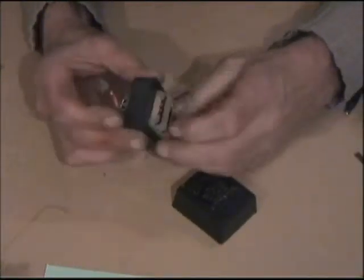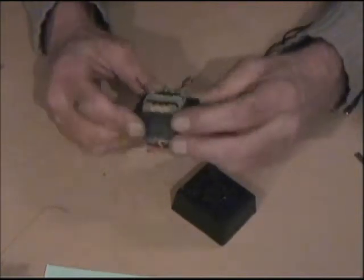Inside there you've got two bobbins. There's a piece of plastic that supports the two bobbins. They actually slot them into this bit of plastic before putting the laminations on.